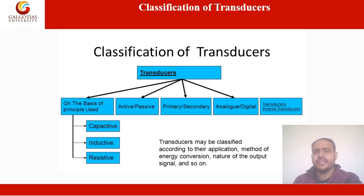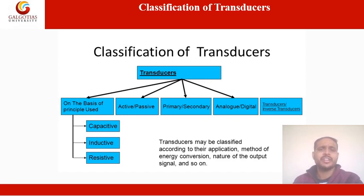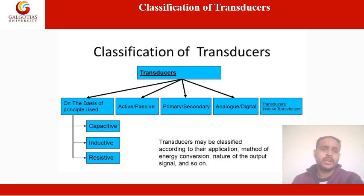Classification of transducers can be done in many ways. Some criteria for classification are based on: areas of application, mode or method of energy conversion, the nature of the output signal, and the electrical principle involved. Transducers can also be classified on the basis of electrical parameter used, principle of operation, and typical applications. Broadly, transducers can be classified as primary and secondary transducers, active and passive transducers, and transducer and inverse transducer.